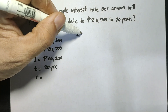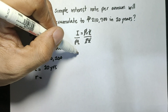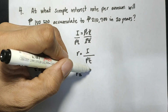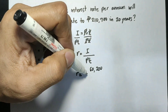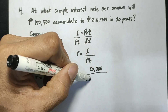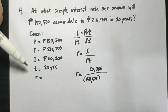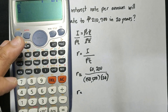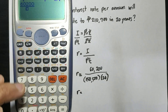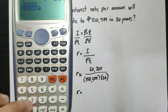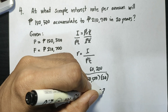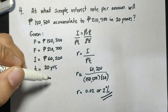Using the formula I equals P times R times T, solving for R by dividing both sides by P times T gives R equals I over P times T. With I as 60,200, P as 150,500, and T as 20 years: 60,200 divided by 150,500 times 20 gives 0.02, or 2%. The answer is 2%.